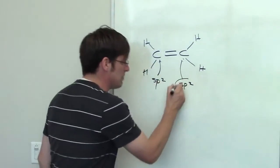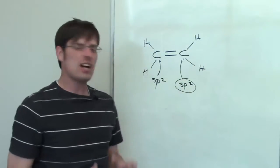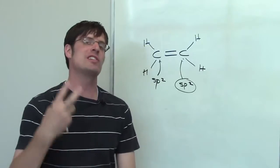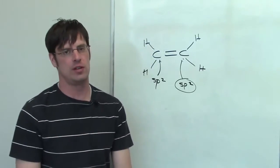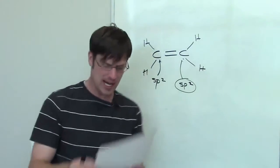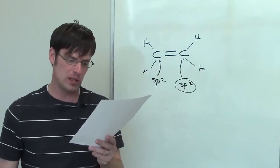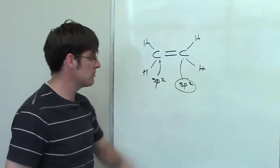Now what does sp2 really mean? What that means is that that carbon took its single outermost S orbital and hybridized it with two of its P orbitals. So the correct answer to this question is actually hybridization between an S orbital and two P orbitals. That's what that thing means.